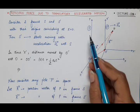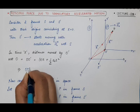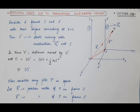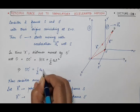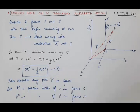Initially the two frames were at rest, so U = 0 because the initial velocity of frame S' is 0. So the distance moved by origin O' with respect to O, because of the acceleration A0 of frame S' with respect to S, will be equal to ½A0 t². Suppose this is equation 1.